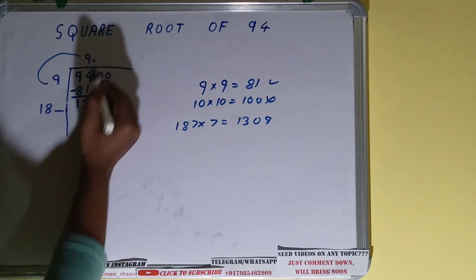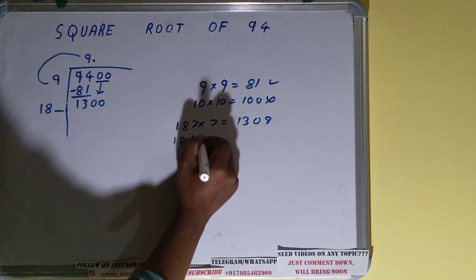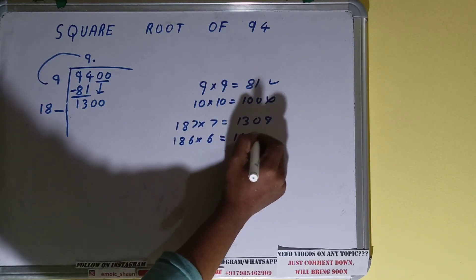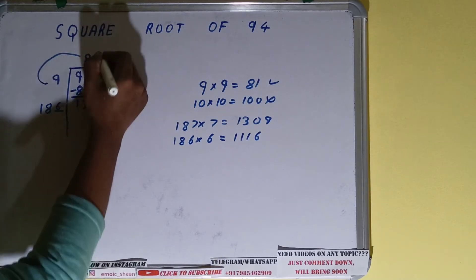1309 is slightly bigger than the number 1300 because the rule is whatever number we use here we have to use here also. So let's try with 6. So it will be 1116 and it is okay to take.